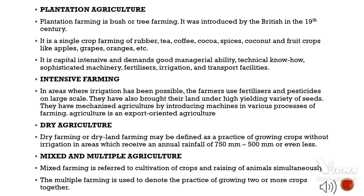Intensive farming: In areas where irrigation has been possible, farmers use fertilizers and pesticides on a large scale. They have also brought their land under high-yielding varieties of seeds and mechanized agriculture by introducing machines in various processes of farming. Dry agriculture, or dry land farming, may be defined as a practice of growing crops without irrigation in areas which receive rainfall of 150 mm to 500 mm or even less.